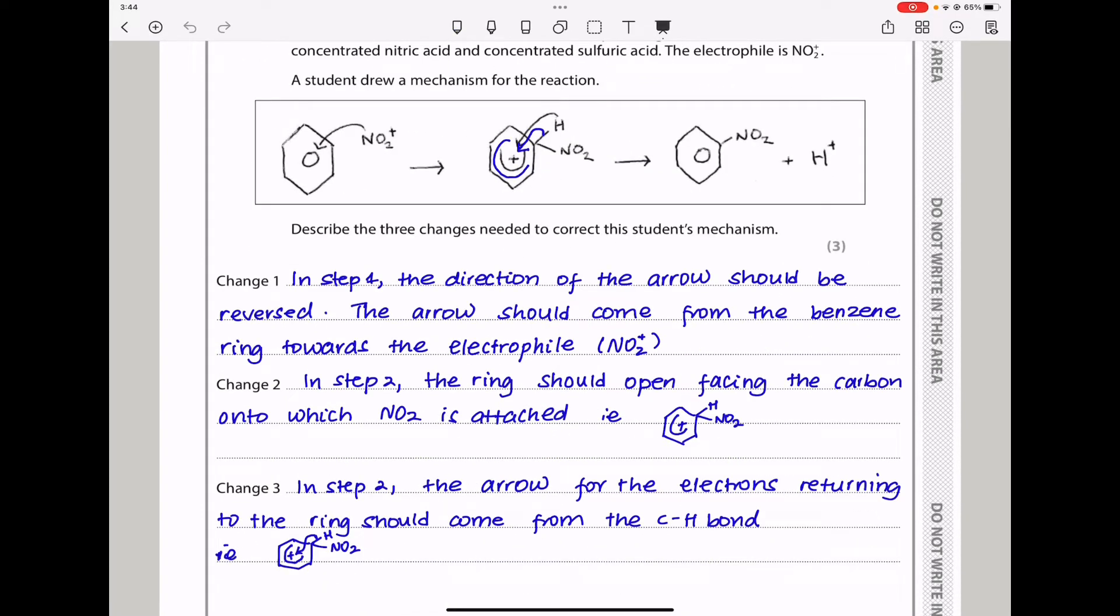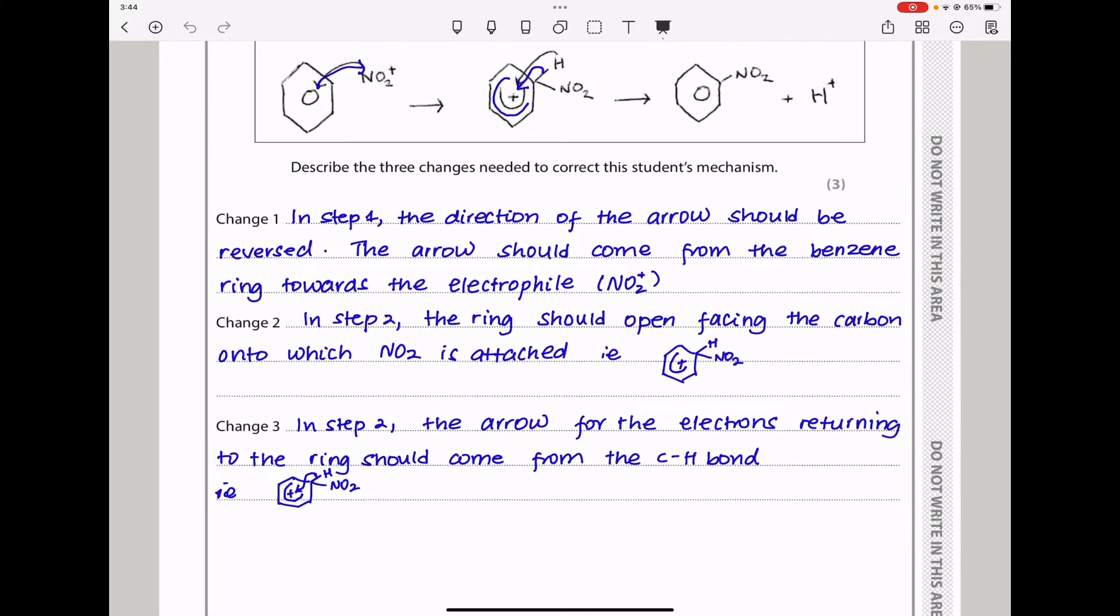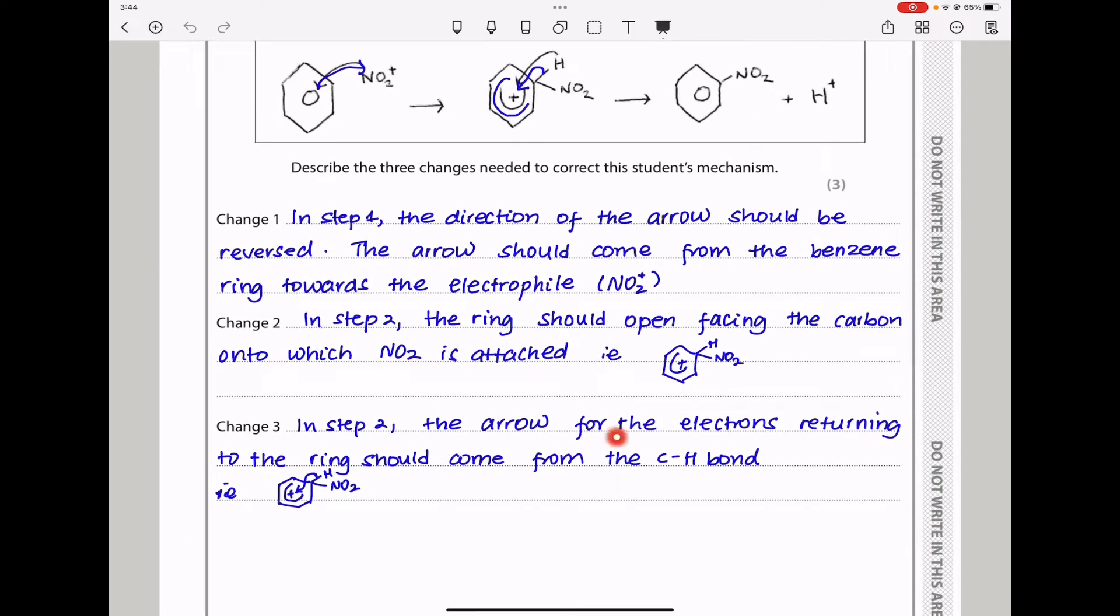Describe the three changes needed to correct this mechanism. In step one, the direction of the arrow should be reversed - it should come from the benzene ring towards the electrophile, going that way. Change two: in step two, the ring should open facing the carbon onto which NO₂ is attached, like shown here. Change three: in step two, the arrow for electrons returning to the ring should come from the carbon-hydrogen bond towards the ring. Those were the three possible changes.